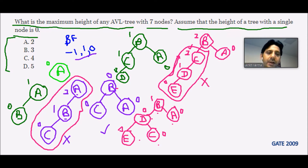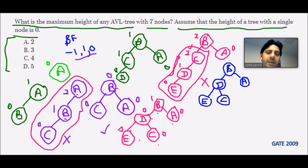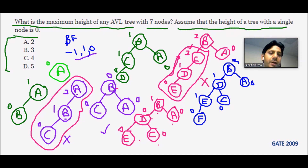Inserting one more node F to the left of E to increase the height. The current tree structure is B, D, A, E, C. After inserting F on the left of E: leaves are at zero, E is one minus zero which is one, D is two minus one which is one, and B is three minus one which is two. A is zero.